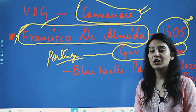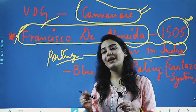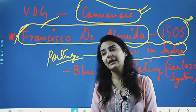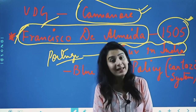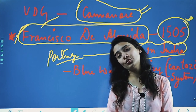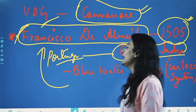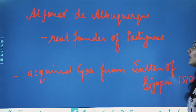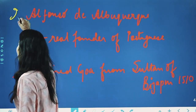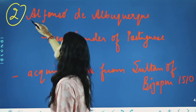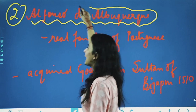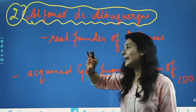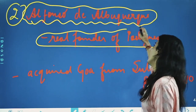If you are asked about the blue water policy, also known as the cartaz system, it was introduced by Francisco de Alameda, who was also the first Portuguese governor in India. The real founder of Portuguese power in India was the second governor — Alfonso de Albuquerque, which is your real founder of Portuguese establishment in India.